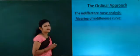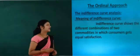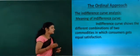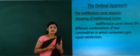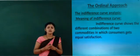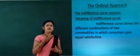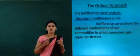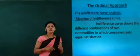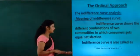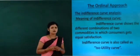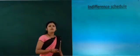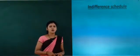Now let us see the meaning of the indifference curve. The indifference curve shows the different combinations of two commodities in which the consumer gets equal satisfaction. It shows different combinations of two commodities, and whatever satisfaction or utility is derived from those two different combinations is the same or equal. The indifference curve is also called the iso-utility curve.